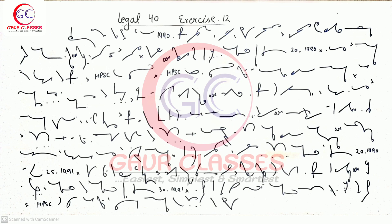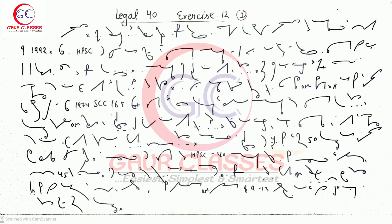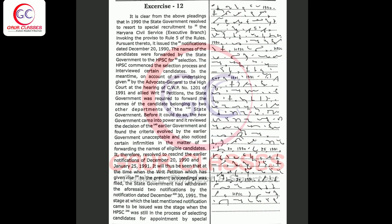It is clear from the above pleadings that in 1990 the state government resolved to resort to special recruitment to the Haryana civil service under bracket executive branch invoking the proviso to rule 5 of the rules.